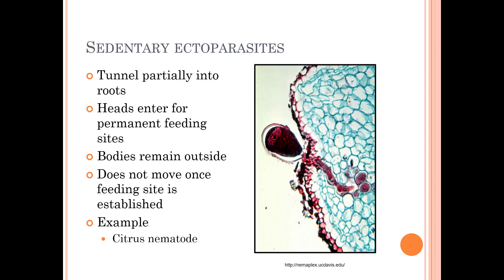Sedentary ectoparasites tunnel partially into the roots. Their head enters the root for permanent feeding, and the bodies remain on the outside. But once they find a feeding site, they don't move. Thankfully, we don't have this particular nematode — this is a citrus nematode found in California.